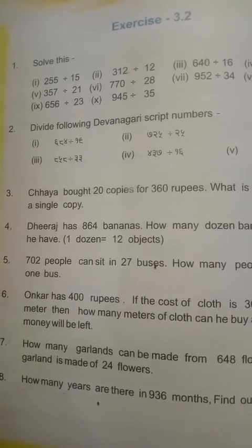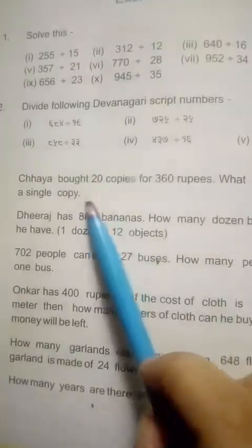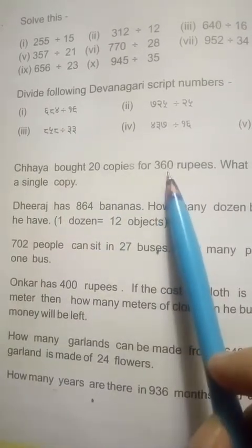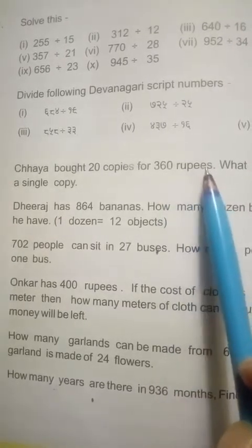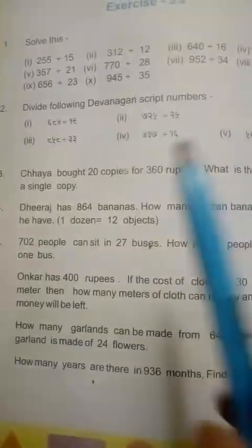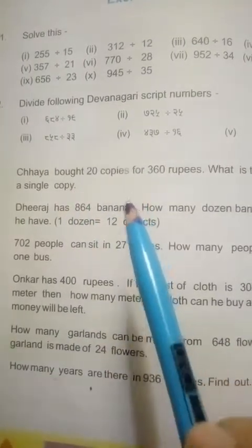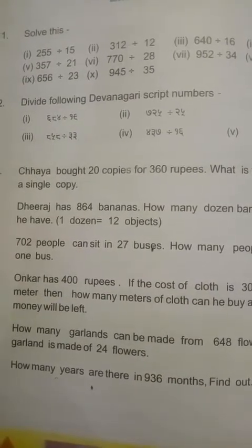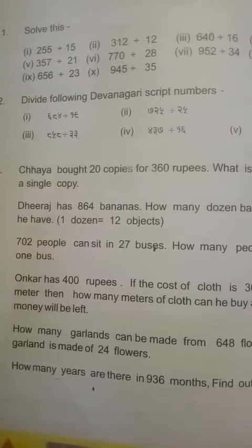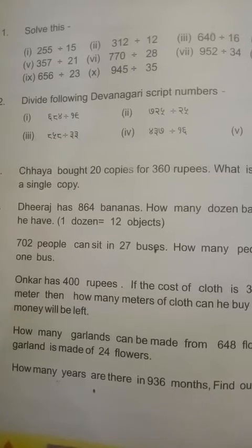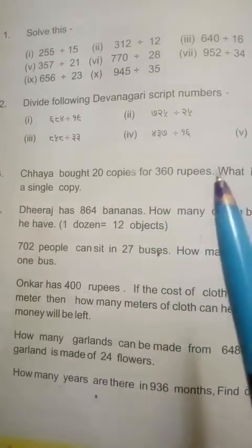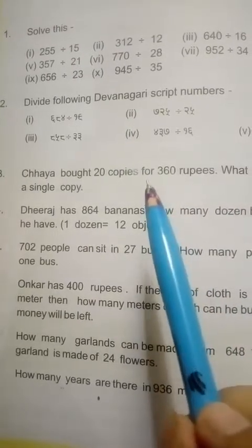Question 3: Chhaya bought 20 copies for 360 rupees. What is the price of a single copy? See here, when we are given more objects and the price of more objects, and then asked about the single price of an object, we always divide the numbers.